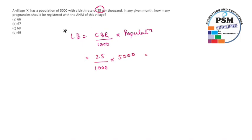That is about the live births. Now in this question, they're asking in any given month how many pregnancies should be registered. So how many live births are there? We know there are 125 live births in 5000 population.